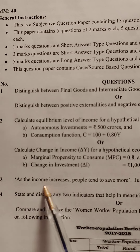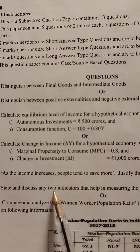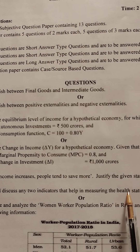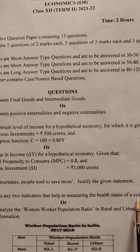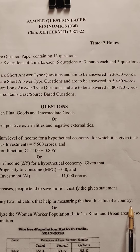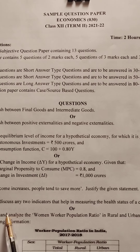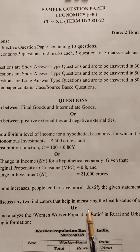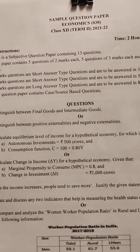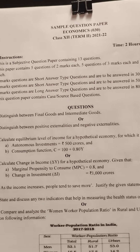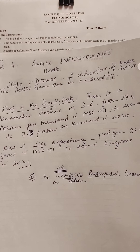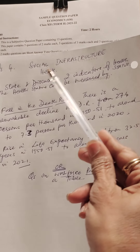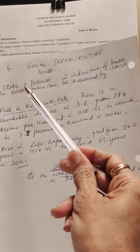Question 4: State and discuss any two indicators that help in measuring the health status of a country. This question is from social infrastructure, specifically from the health section.